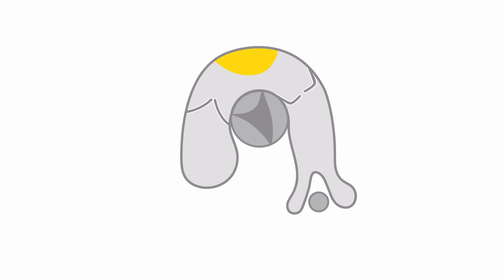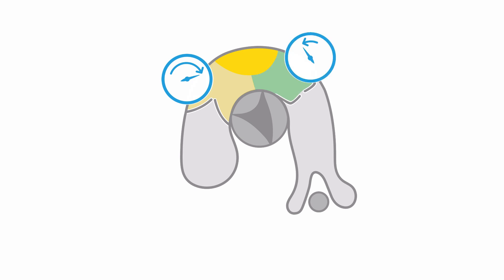Here are the anomalous muscle bundles which cause obstruction to right ventricular outflow. This causes a backup of pressure proximal to those bundles in the inflow region, which leads to a high pressure chamber. On the distal side of the bundles, the pressure remains normal or even low. So we have two different pressure compartments within the same right ventricle, and this is why the condition is called a double-chambered right ventricle.